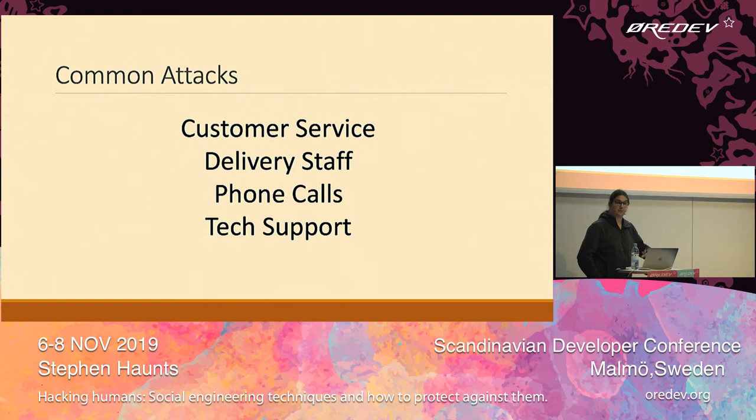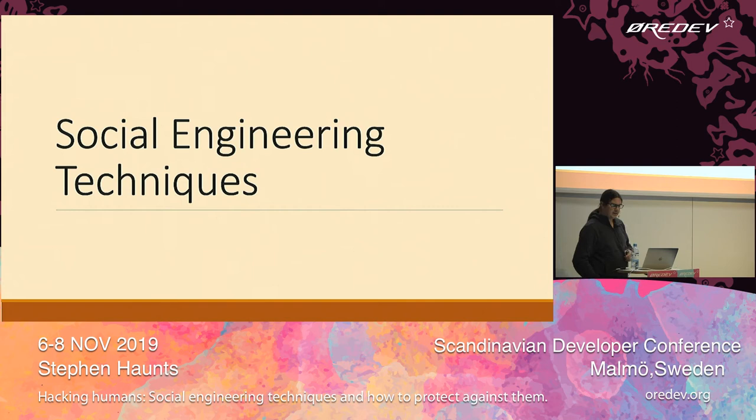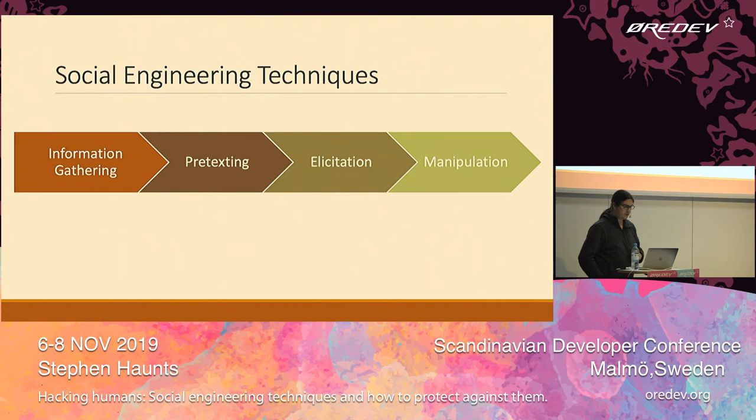So that's some background on what social engineering is. What are the techniques people use? There's typically a four-stage process: information gathering, pretexting, elicitation, and manipulation. Let's go through each one in turn.